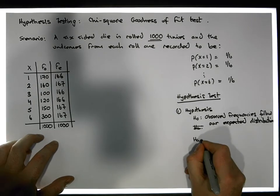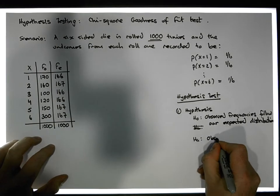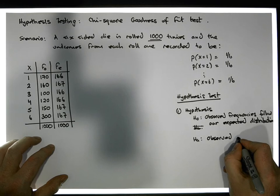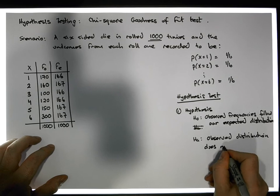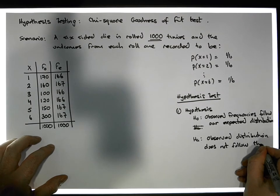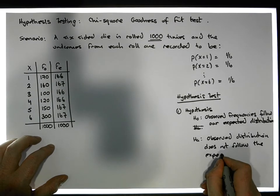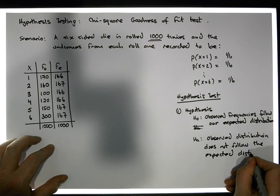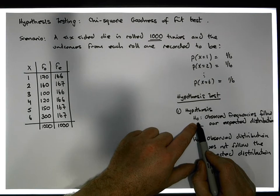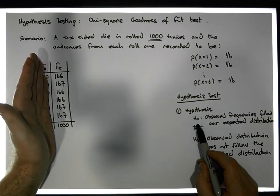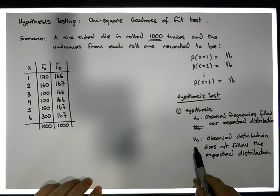And the alternative is that there is a difference — that the observed frequencies, or the observed distribution, does not follow the hypothesized distribution, which is the expected distribution. So this is our hypothesis test. We have a null position: there's no difference between what we've observed and what we expect. And we have an alternative: there's evidence to suggest that what we've observed deviates away from what we'd expect to happen.